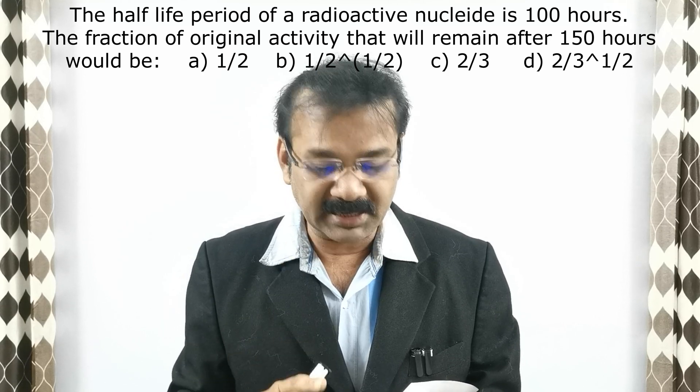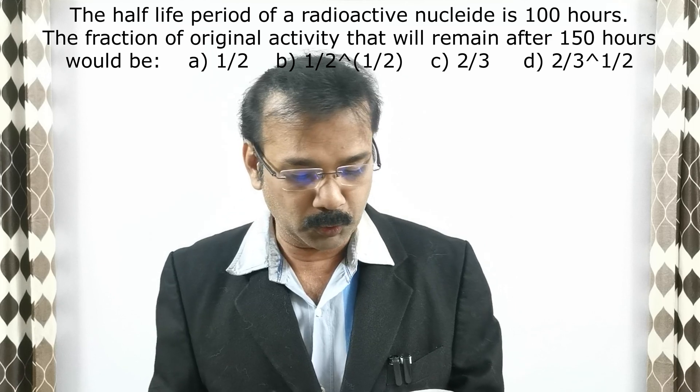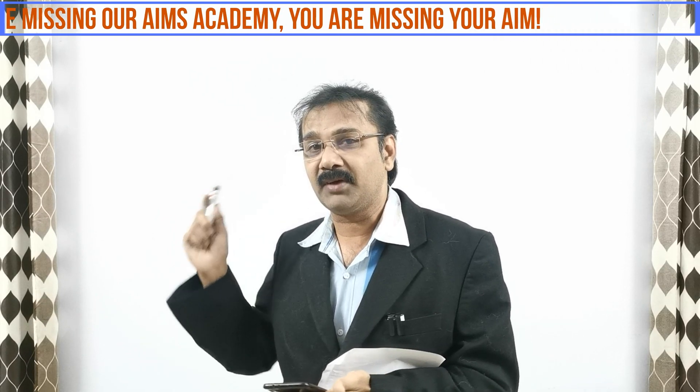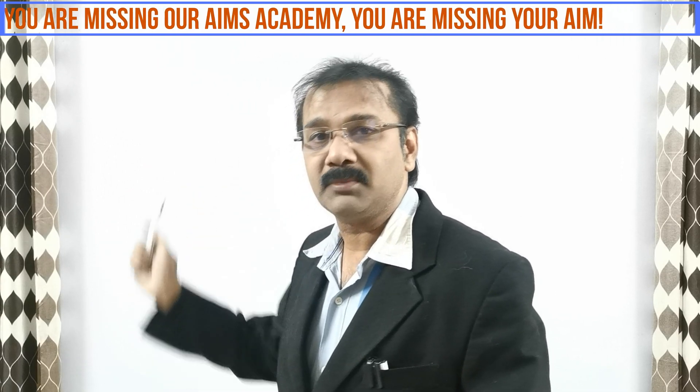The fraction of original activity that will remain after 150 hours — option A is 1/2, option B is 1/(2√2), option C is 2/3, option D is 2/(3√2). The same question model I have given in my channel with a shortcut method. The number only has been different; the remaining model is the same.